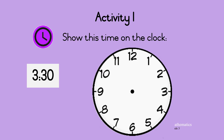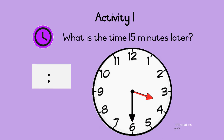Activity one: show this time on the clock — half past three. The minute hand is on six, showing 30 minutes, and the hour hand is halfway between three and four. What is the time 15 minutes later? Let's use the clock to help us. Move the minute hand clockwise by 15 minutes.